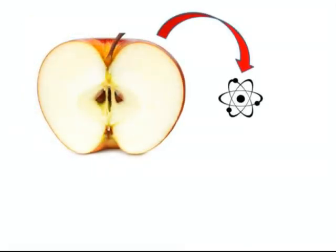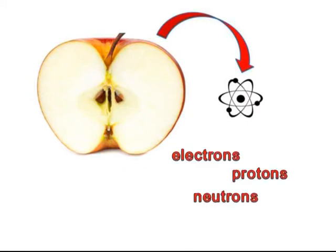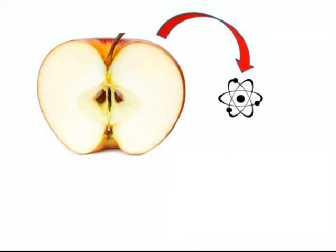If you break down atoms, you'll find they are made of three components: electrons, protons, and neutrons. Protons and neutrons are composed of smaller particles called quarks.